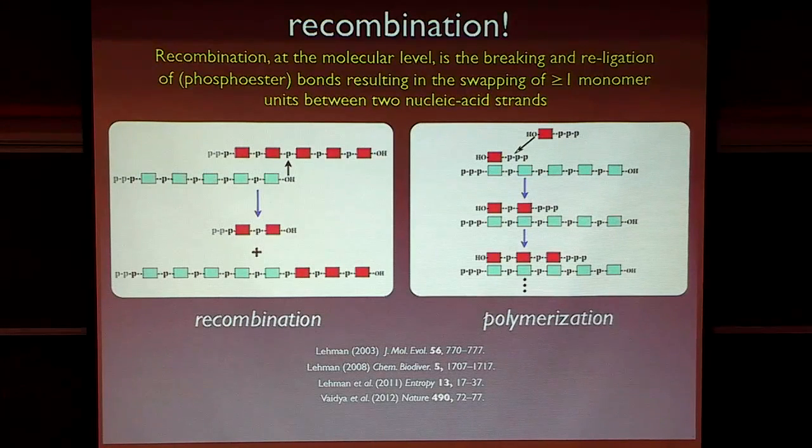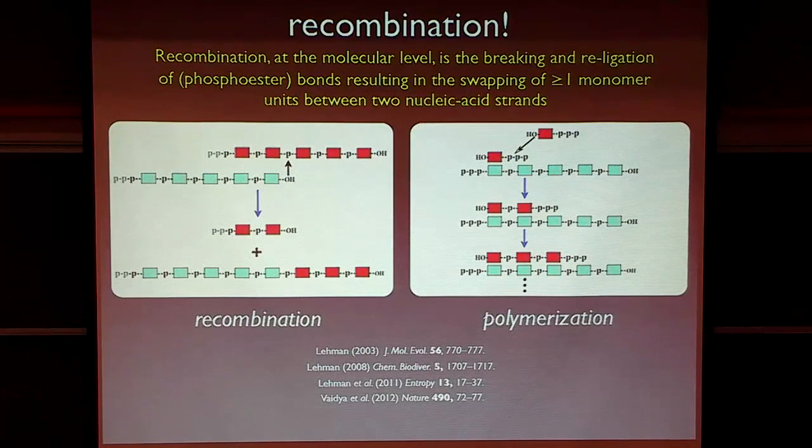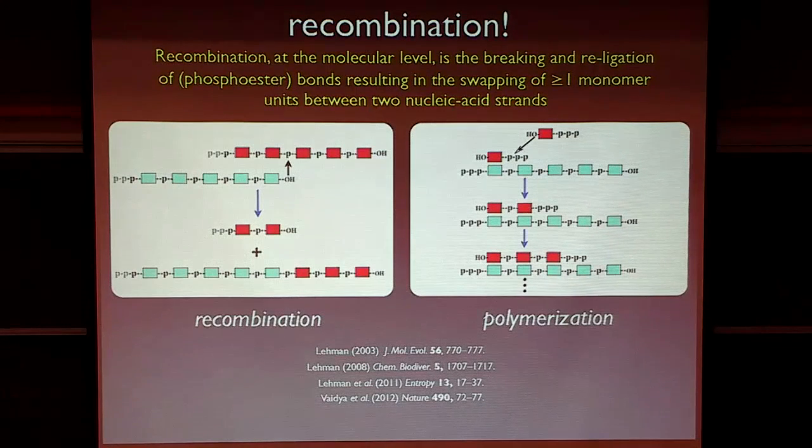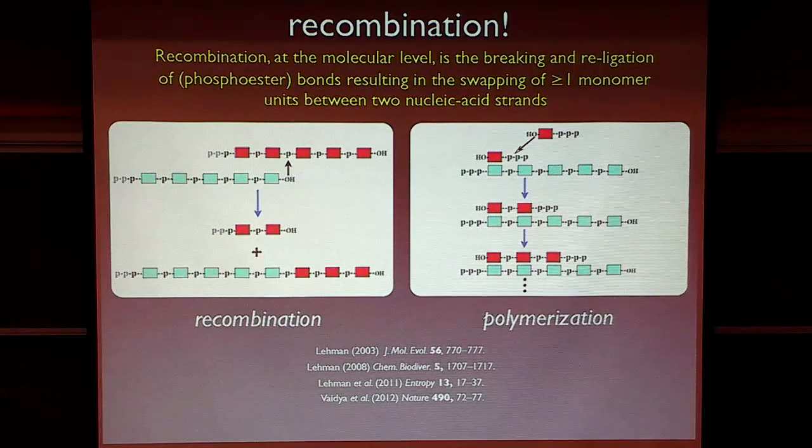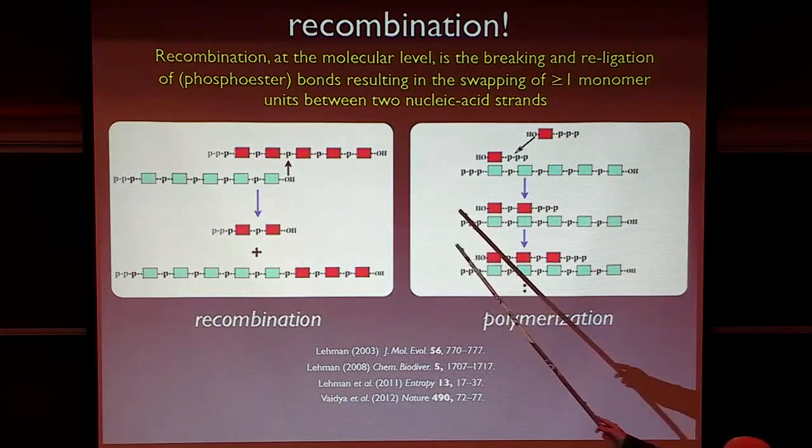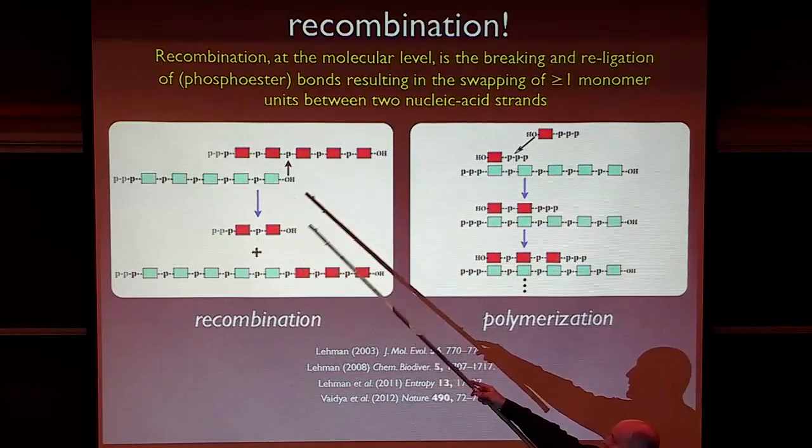So, what is recombination? What is recombination to a chemist? Well, recombination to a chemist is where you take blocks of genetic information and you shuffle them around to make new versions of sequences. So, on the left here, we have a depiction of what I would call recombination, where we have two strands, a green strand and a red strand,